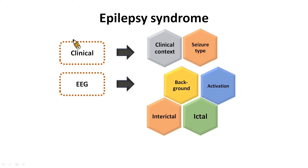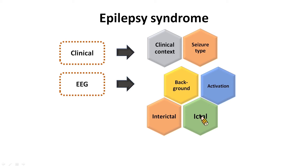Each epilepsy syndrome has its specific clinical characteristics. In each example I am going to show you, I will begin with the clinical context followed by the EEG. For the EEG, I will cover the background activities, activation, interictal discharges, as well as the ictal pattern of each particular epilepsy syndrome. Taken together, this information will give us a lead to the diagnosis of the different epilepsy syndromes.